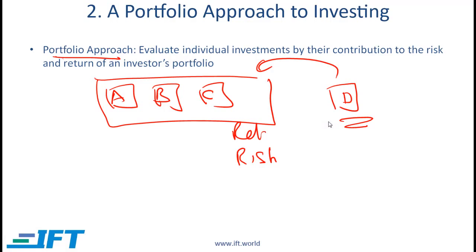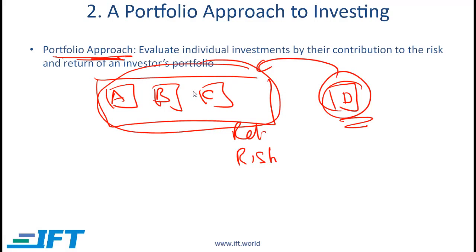If the investor is not using a portfolio approach, then he will simply look at the risk and return of stock D in isolation. The right approach is the portfolio approach because ultimately the wealth of the investor is based on his portfolio. So what really matters is the impact on the portfolio of adding or not adding another investment.